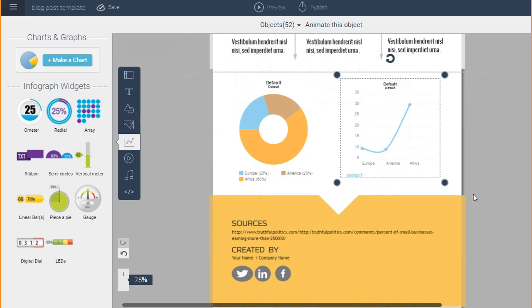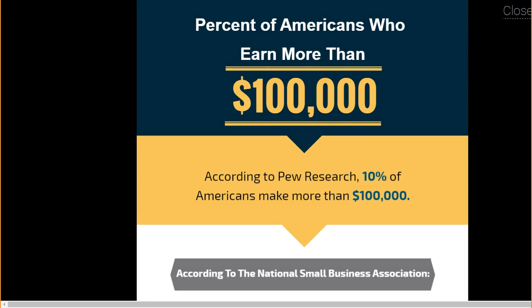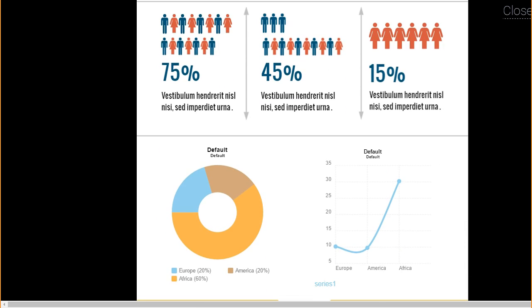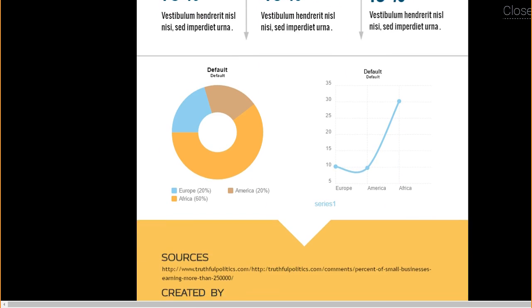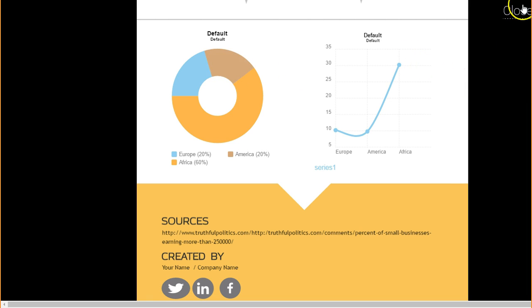Let's say I want to see how this looks in preview mode. All I have to do is click on preview and I can see how my infographic is looking so far. If you go to the chart we recently inserted, you'll see that when you put your cursor over each of the data values, you see the rollover value — so it has an interactive characteristic to it as well.